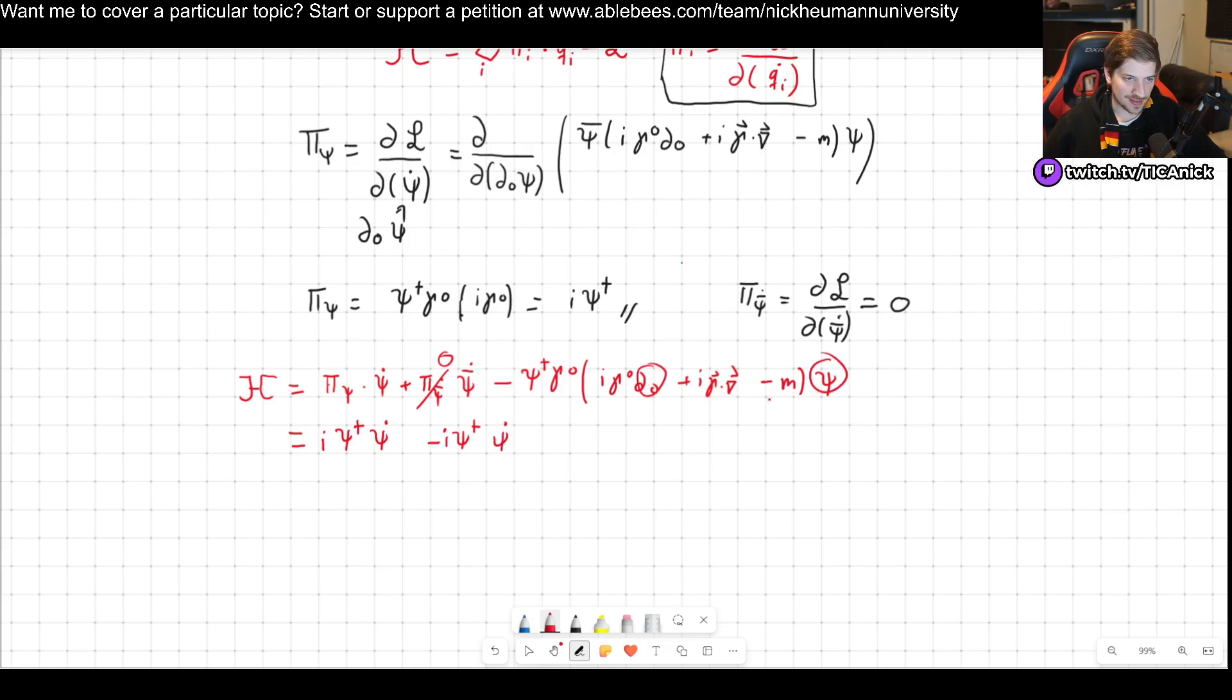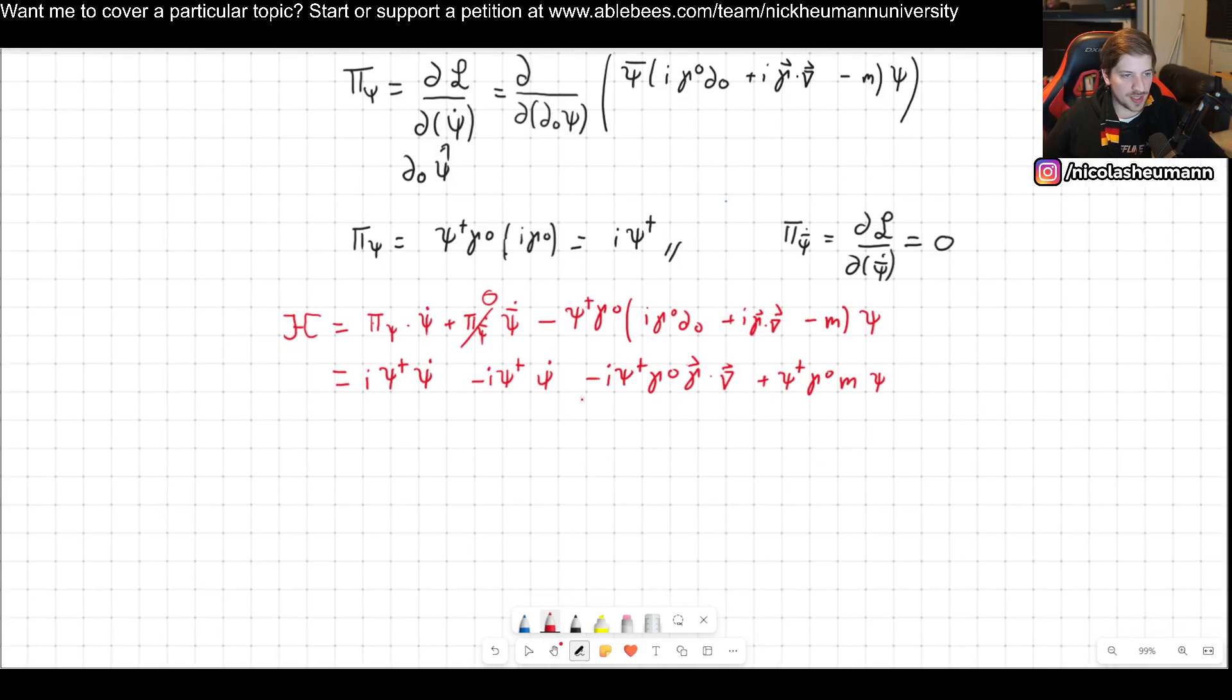Then we got minus psi dagger gamma 0 and i in front, gamma dot the spatial derivatives. And then finally we got plus m psi dagger gamma 0 psi.